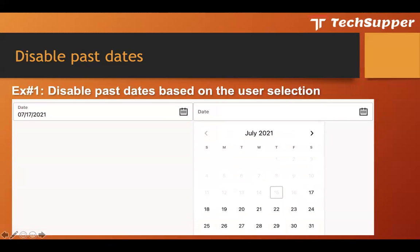Another example involves two date pickers. The first is a 'from' date picker and the second is a 'to' date picker, and you want users to select only a second date that is greater than or equal to the first selected date. For instance, if the user selects July 17th as the first date, the second date must be July 17th or beyond.